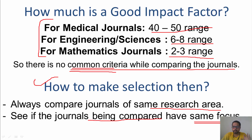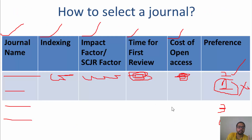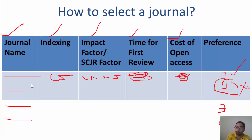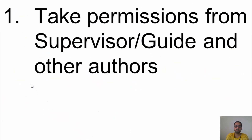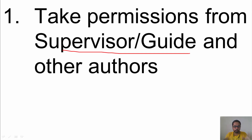After you have selected a journal and built your preference list, the first step is to share the journal name with your guide or supervisor. They know your work, have checked your article, and know what kind of journal would be best. Share the comparison table with your supervisor and tell them which journal you want to submit to first.